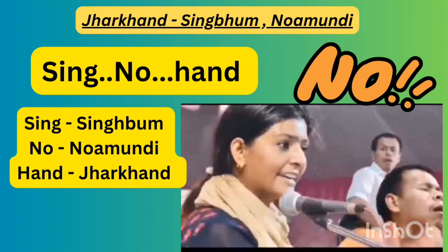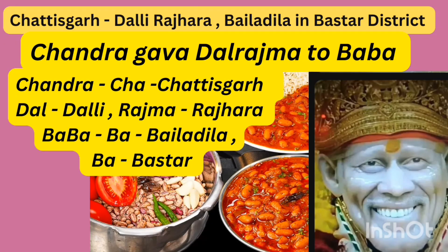Next shortcut: 'Chandra gave Dal Rajma as Prasad to Baba.' 'Chandra' — C.H.A refers to Shatishkar. 'Dal' — D.A.L refers to Dali. 'Rajma' — R.A.J refers to Rajkara. 'Baba' — the first B.A refers to Baila Adila, and the second B.A refers to Basta district.